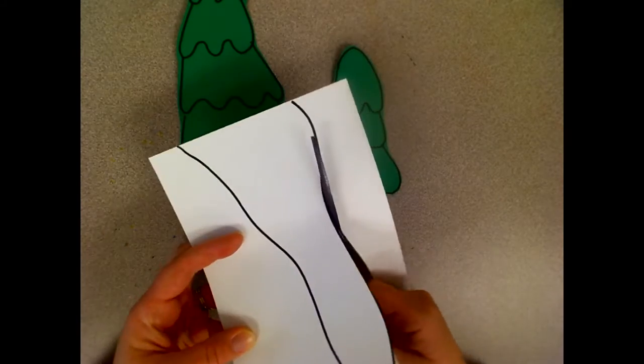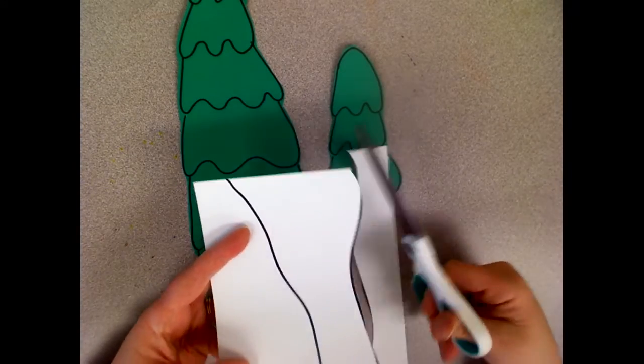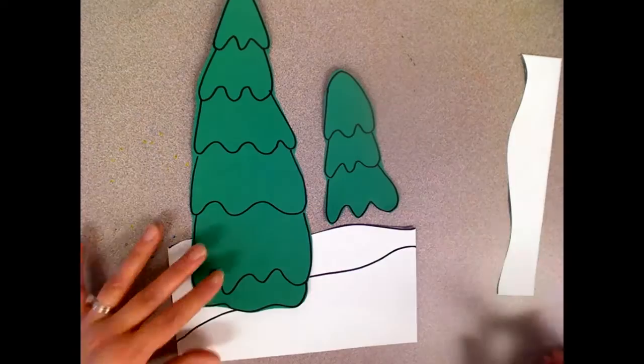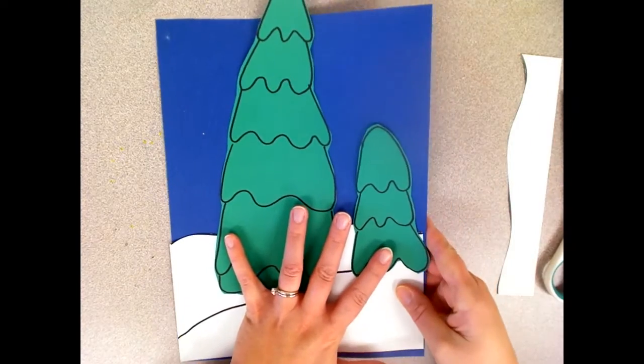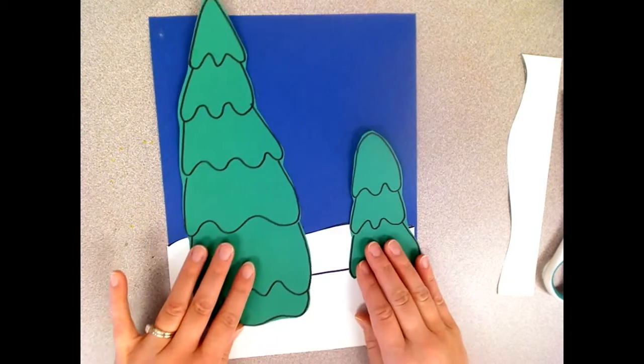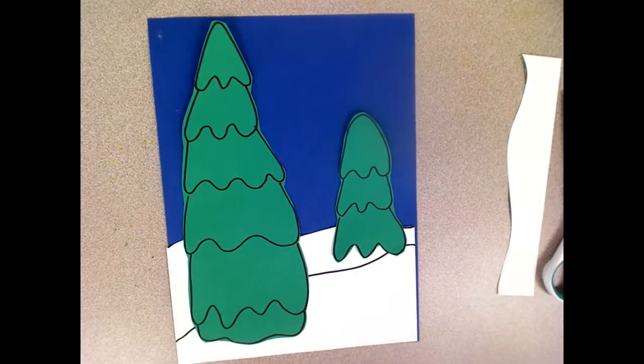Use your scissors to cut on that line. Again you don't have to cut right on the line. You can cut right above it or around it. See how your trees will go into the snow like they're coming out and then the blue paper will be your background. You can position everything to see how it looks before you glue it down.